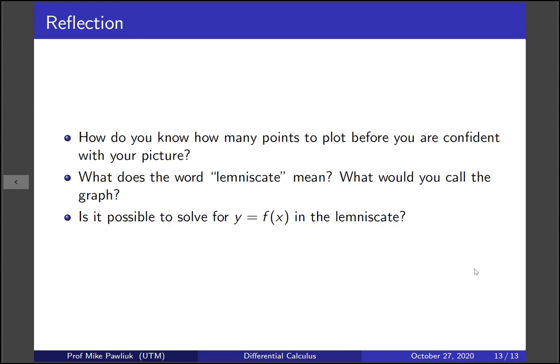And now let's end with some reflection. How do you know how many points to plot before you are confident with your picture? What does the word lemniscate even mean? What would you call the graph? So if you had the choice, what would you call the graph of the lemniscate instead? Is it possible to solve for y = f(x) in the lemniscate? Thank you very much and have a great day.